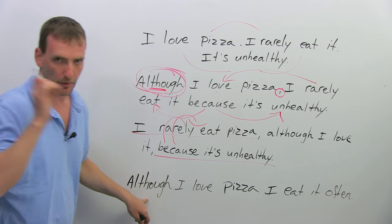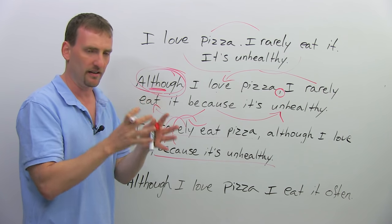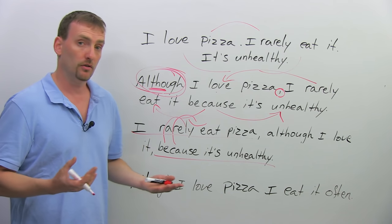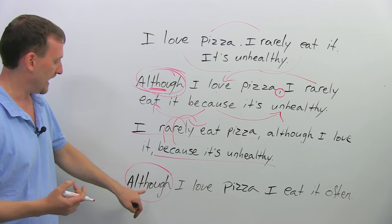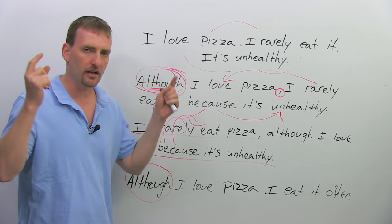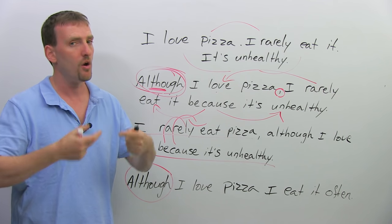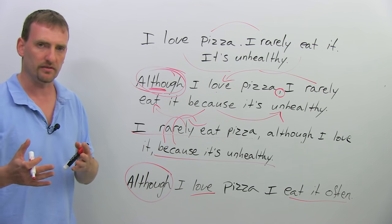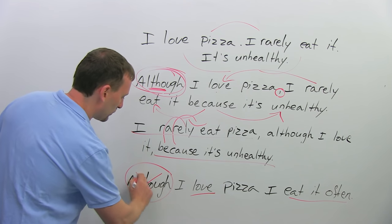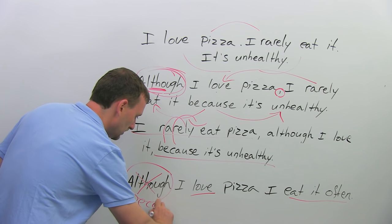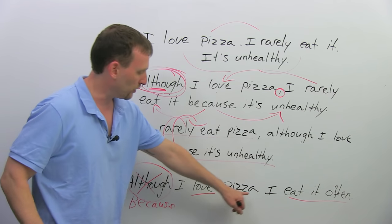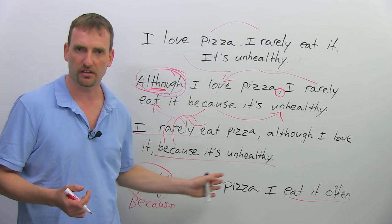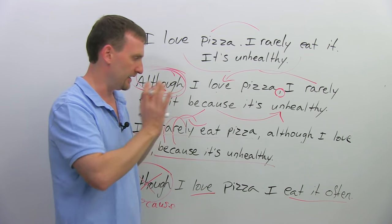I want to drive this home about relationships. "Although I love pizza, I eat it often" — does this sentence make sense? No, of course not. As soon as the reader or listener hears "although," they're listening for two contrasting ideas. "Love" — good. "Eat often" — good. Positive, positive. There's no contrast. The correct conjunction here is: "Because I love pizza, I eat it often." Notice here I didn't put a comma. With "because," it's very uncommon to use a comma; the relationship is very clear.